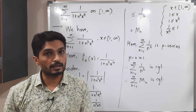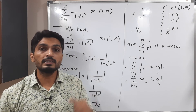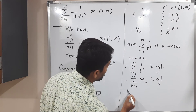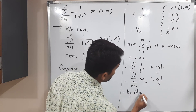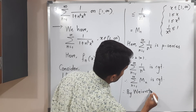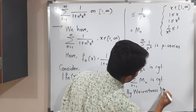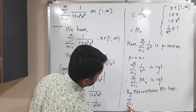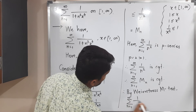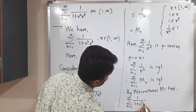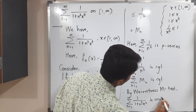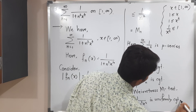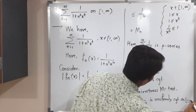Therefore, by the Weierstrass M-test, the given series of functions — summation n from 1 to infinity of 1 upon (1 + n² x⁴) — is uniformly convergent on the interval [1, ∞).